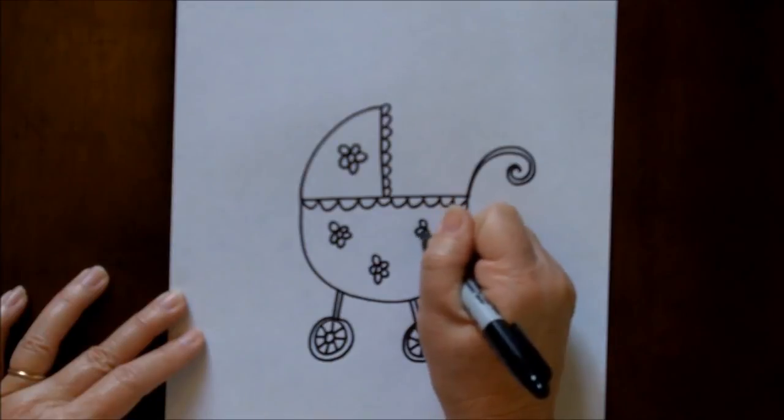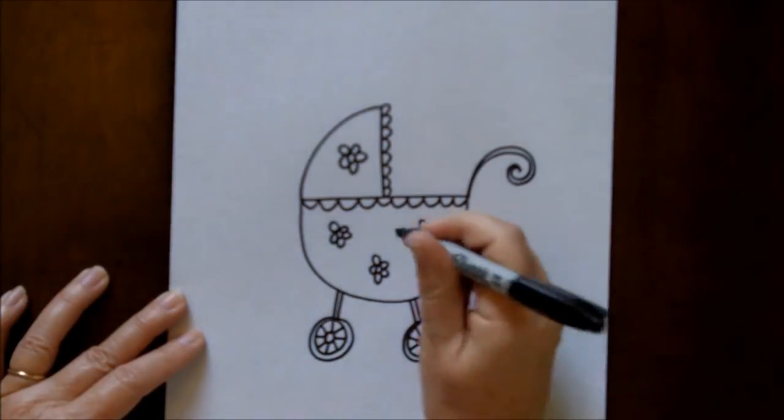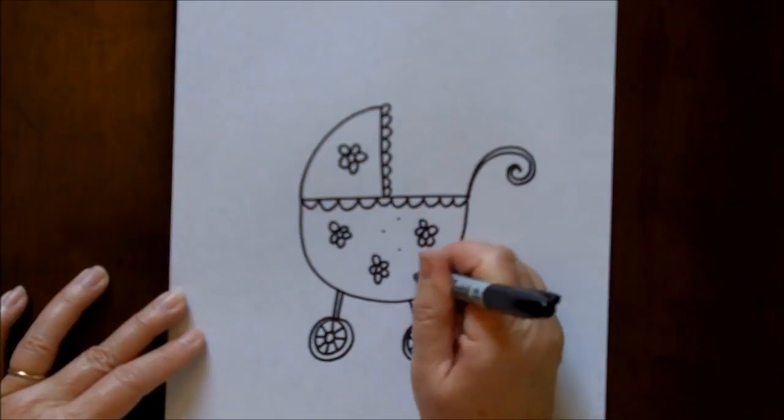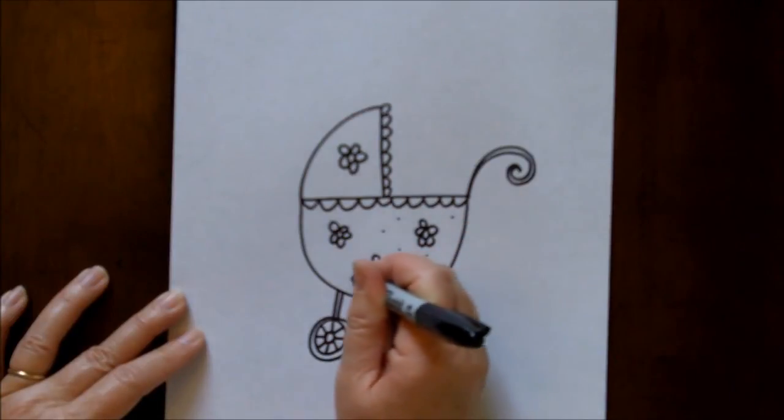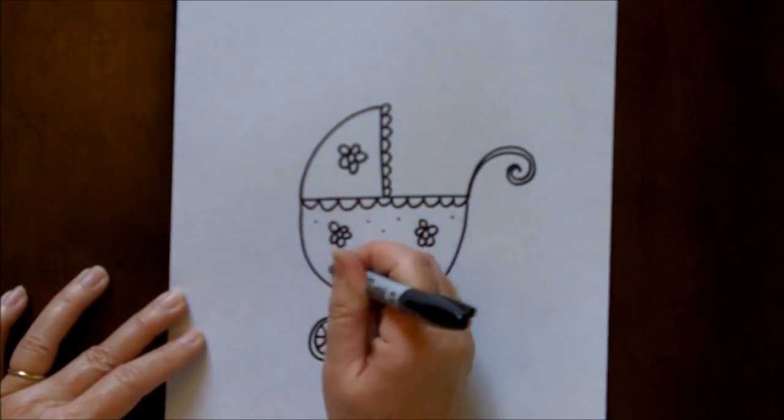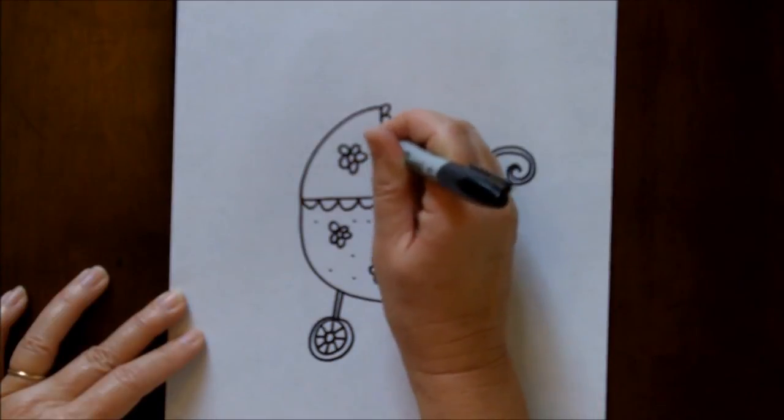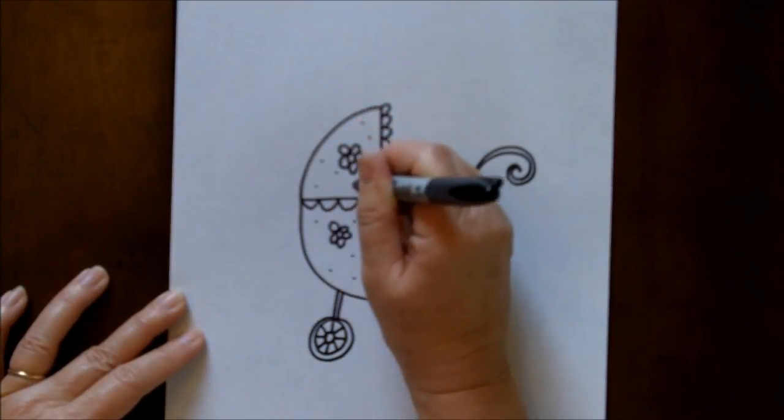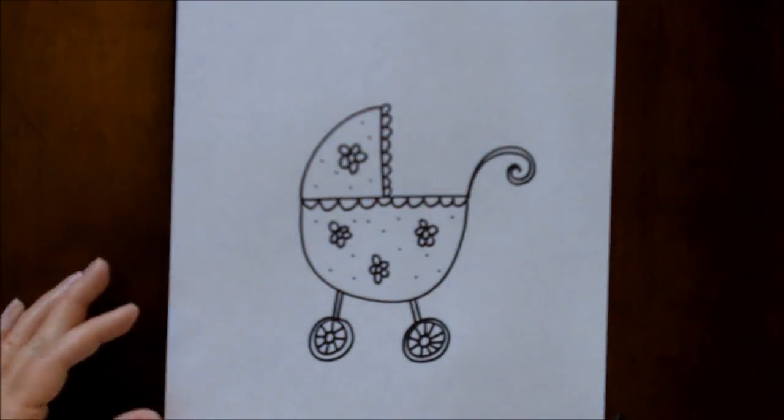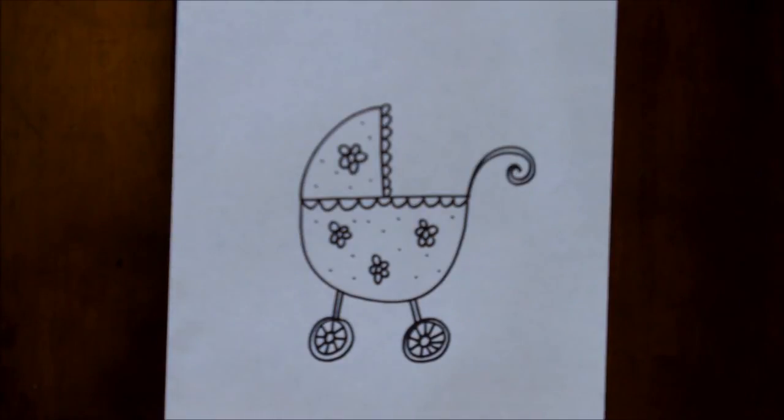I'm just going to put a few daisies here, and then I also like to fill in with a few little dots. I think that looks cute. And there you have it, there's your baby carriage. Thank you for watching.